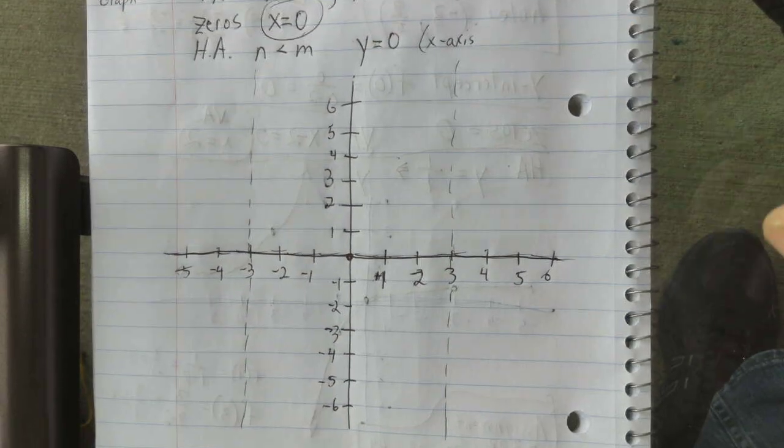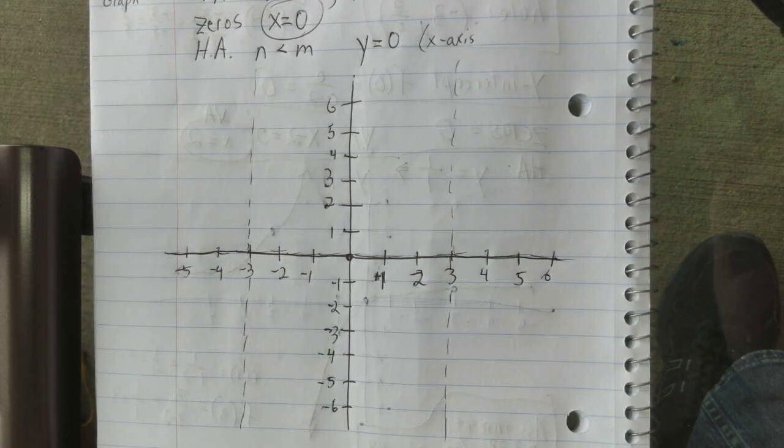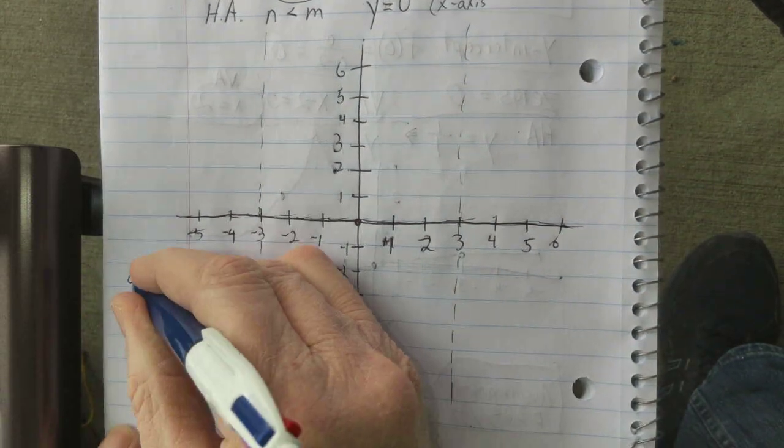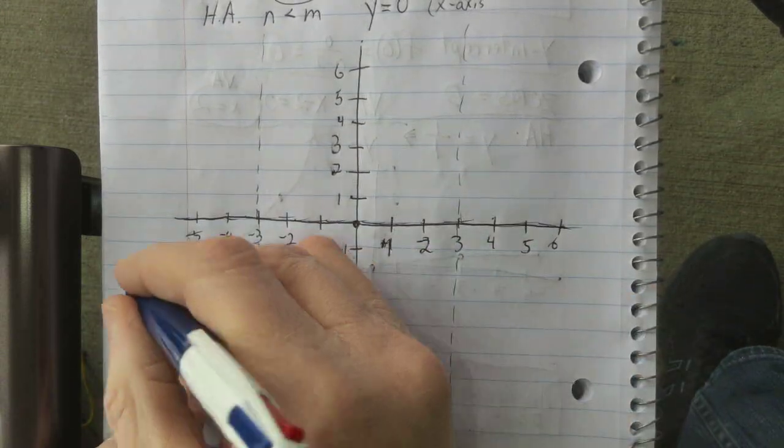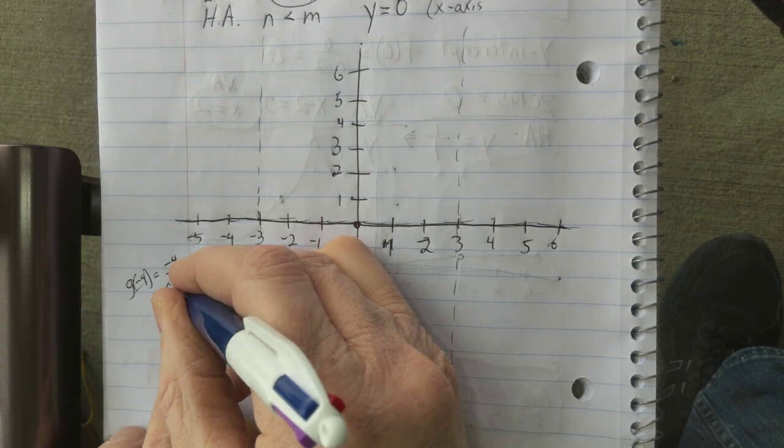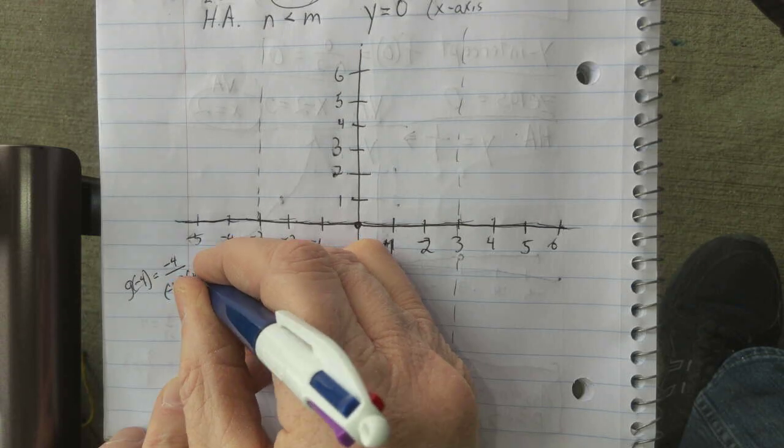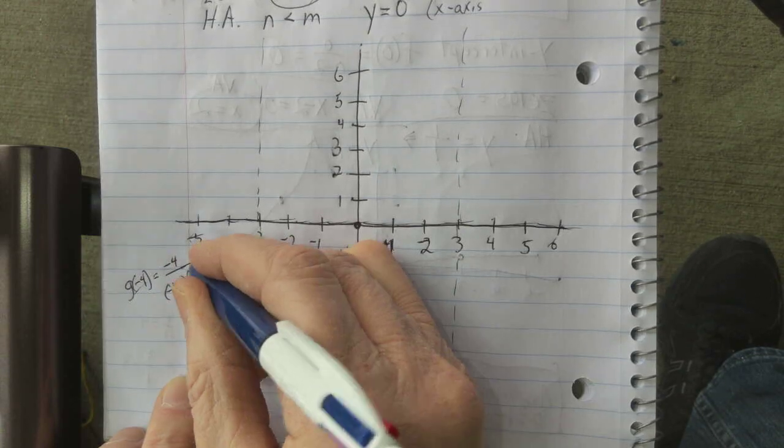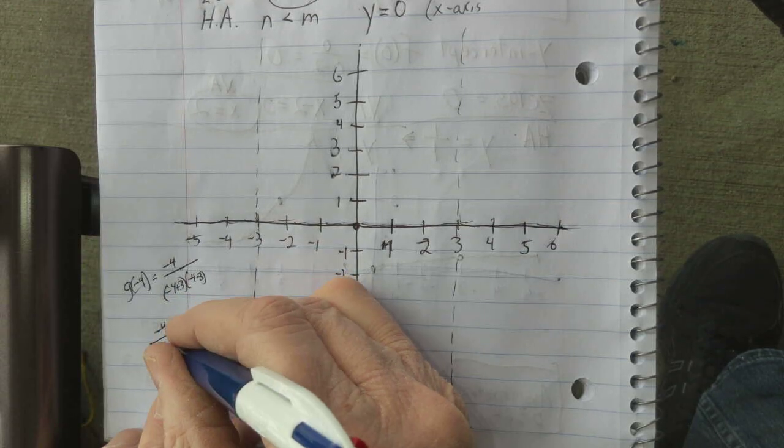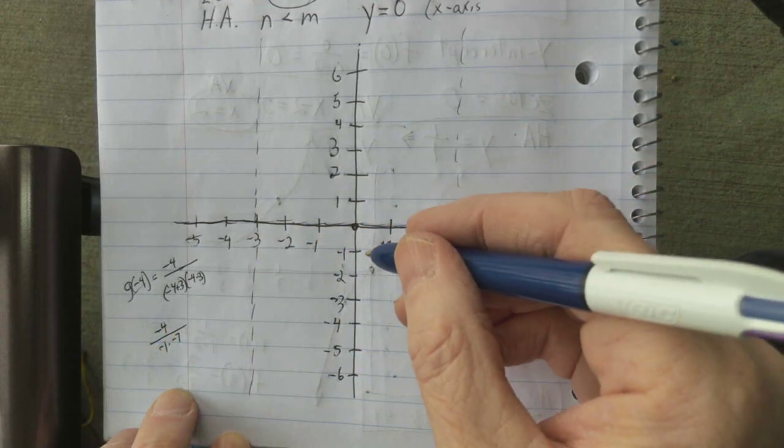So, all right. Well, it's time to start getting some other points. We've done everything we can with this. So I'm curious about what g of negative 4 is equal to. And that is negative 4 over... I'm going to use the factored part. I just think it might be a little easier. Negative 4 minus... Plus 3 and negative 4 minus 3. So I'm looking at negative 4 over negative 1 times negative 7. So that's negative 4 sevenths.